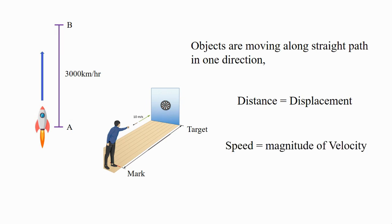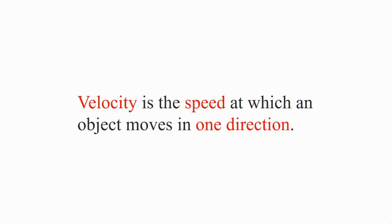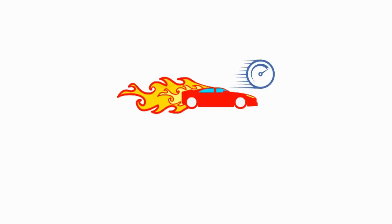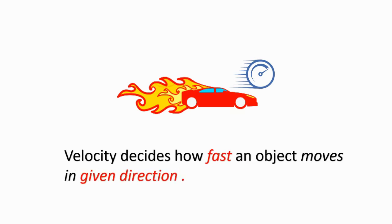Hence, the speed of the object is equal to magnitude of velocity. Therefore, velocity can also be defined as the speed at which an object moves in one direction. From all the discussion, we learned that velocity decides how fast an object moves in one direction.